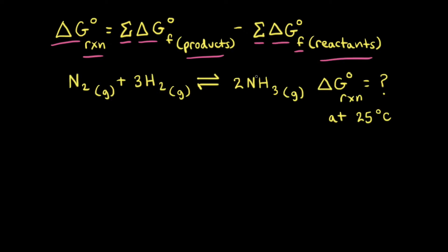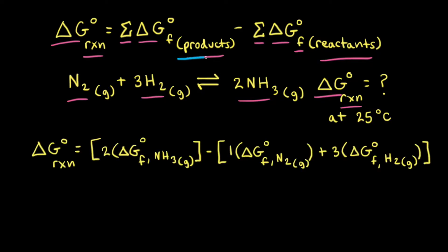For our reaction, let's look at the synthesis of ammonia gas from nitrogen gas and hydrogen gas. Our goal is to calculate the standard change in free energy for this reaction at 25 degrees Celsius. First, we need to think about our products. For this reaction, we have only one product — ammonia. Notice there's a 2 as a coefficient in front of ammonia in the balanced equation. So we look up the standard change in free energy of formation of ammonia at 25 degrees Celsius and multiply it by 2, because we have 2 moles in our balanced equation.